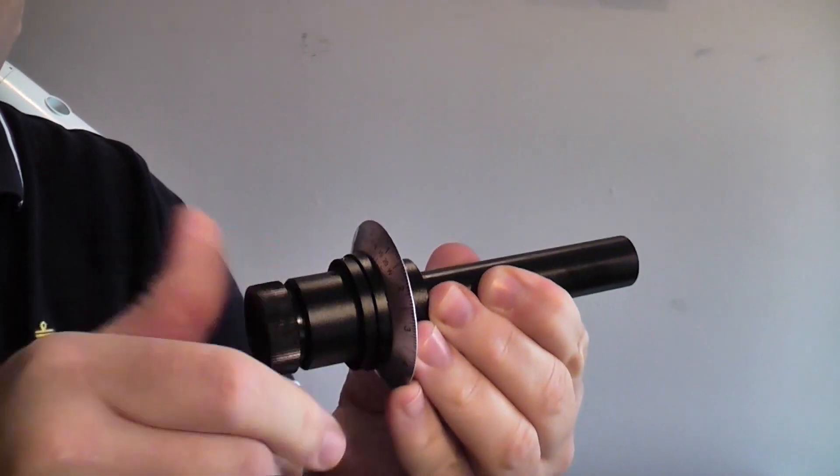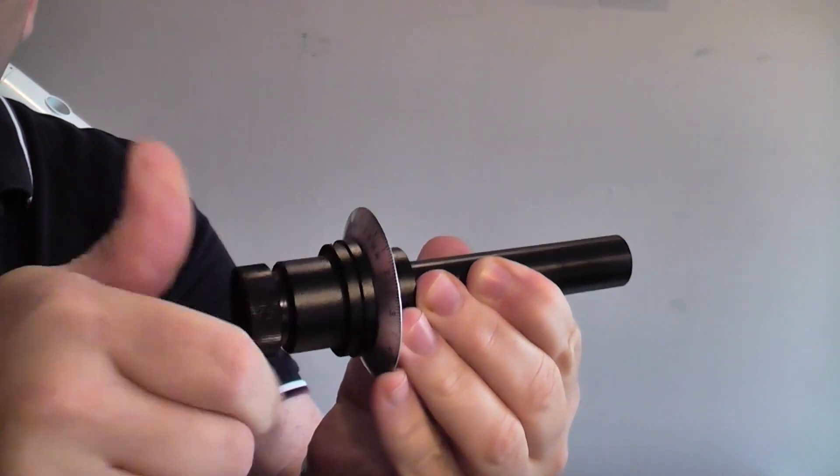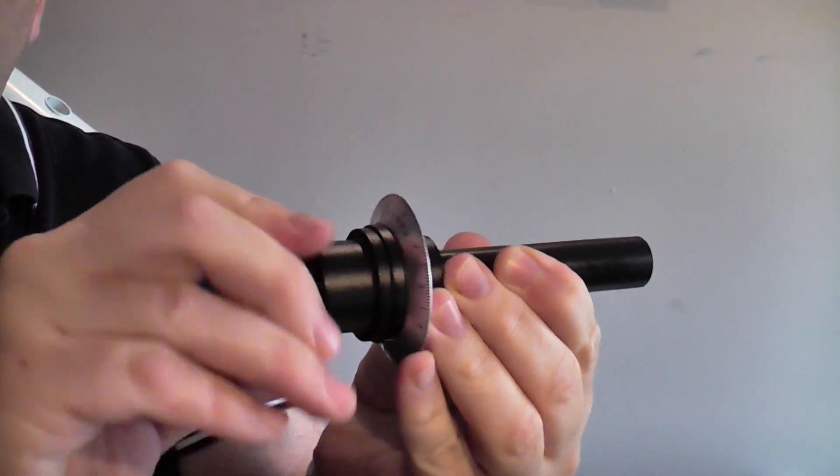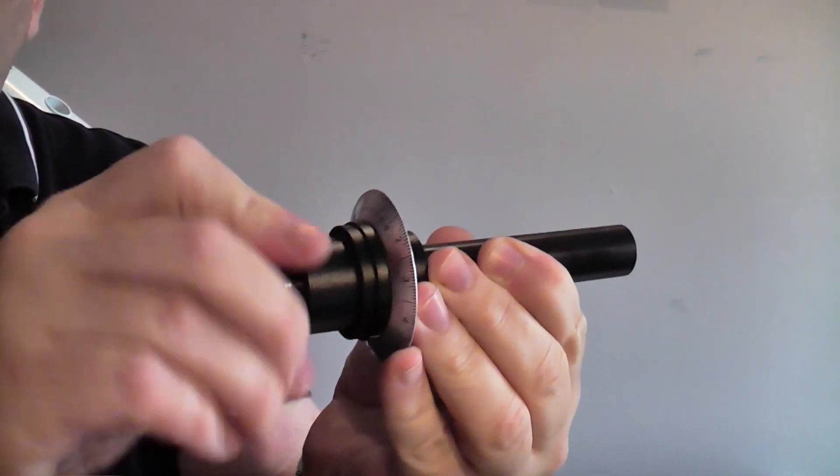So this is what the polar scope looks like. I'm just going to remove the eyepiece from this so that we can have a look inside and see what's happening in there.